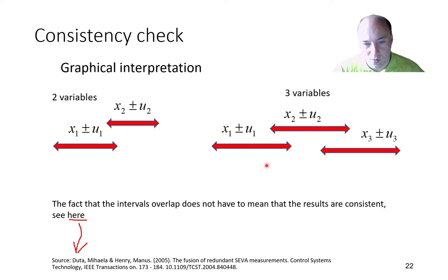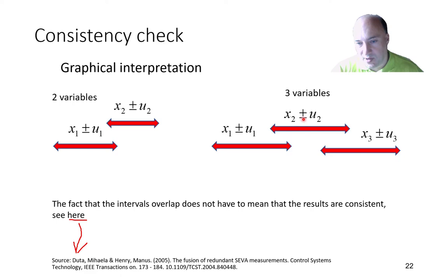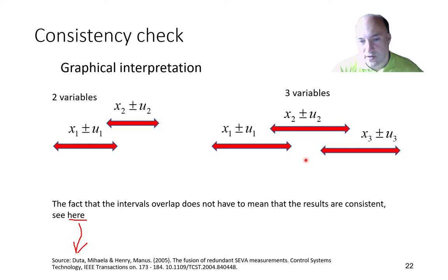It's then up to us to define what condition we accept — whether we are looking for consistency of just two signals, or three or more. Now let's define the consistency criteria. Given two signals x1 and x2 with uncertainties u1 and u2, we define the difference phi = x1 - x2. For ideal sensors measuring the same variable, the difference would be zero. In the real world, with noise and uncertainty, we won't get exactly zero, but if the result is consistent, this difference should be small and under some given threshold.